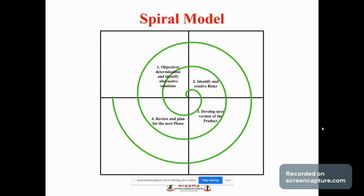See the figure here — it shows the spiral model. The spiral model is similar to the incremental model. The spiral model has four phases: first is planning, second is risk analysis, third is engineering, and fourth is evaluation. A software project repeatedly passes through these phases in iterations, and these iterations are called spirals.